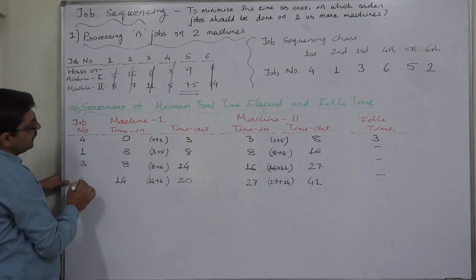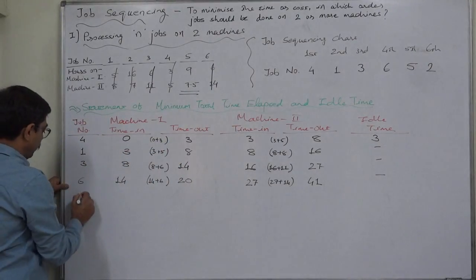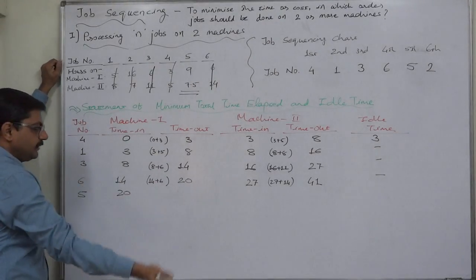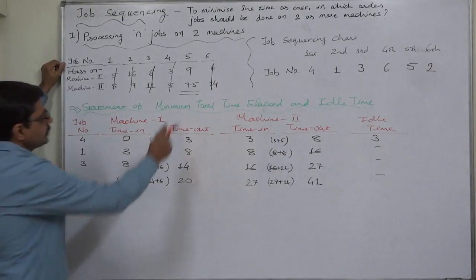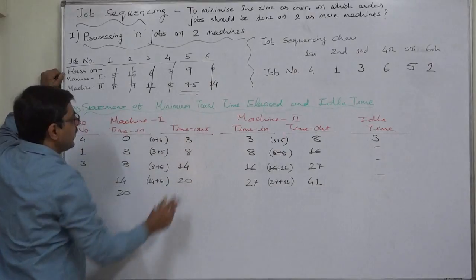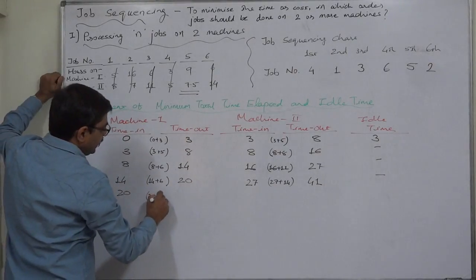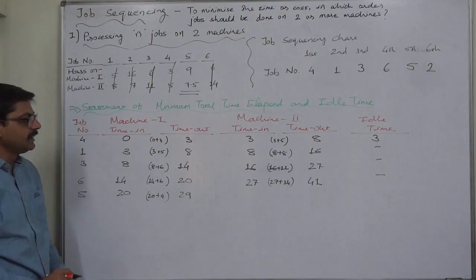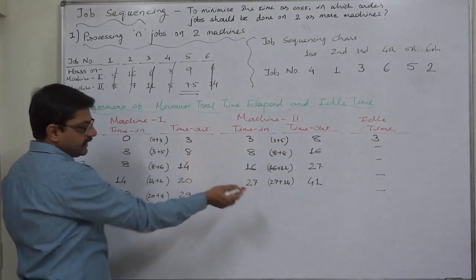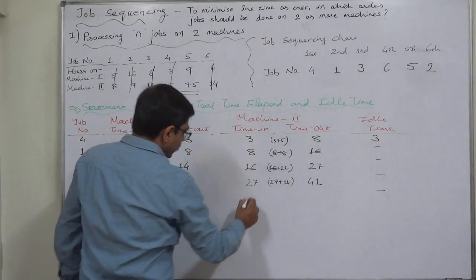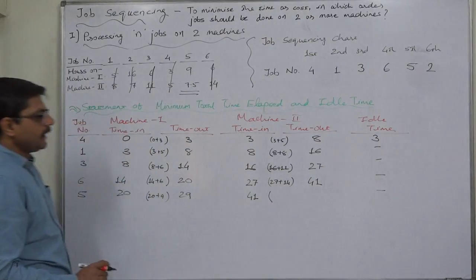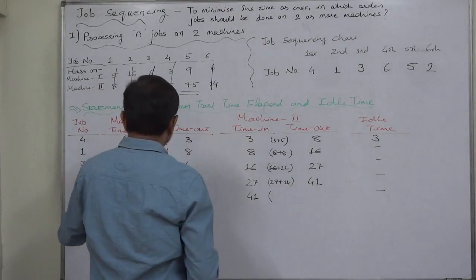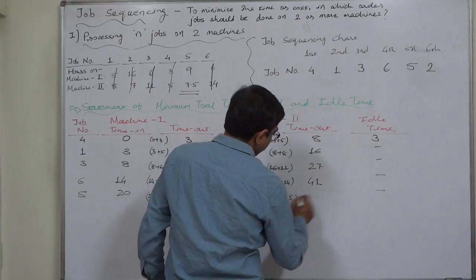On machine 1, after completing job number 6, it is the turn of job number 5. Job number 5's timing is 20 on machine 1, because immediately after completing job 6, machine 1 takes job number 5. Job number 5 needs 9 hours on machine 1, so 20 plus 9 gives 29. But at that point machine 2 is busy completing job number 6, so there is no idle time — the job is waiting, not the machine. 29 or 41, whichever is higher, gives 41 as the time in for job number 5 on machine 2. Job number 5 requires 7.5 hours on machine 2, so 41 plus 7.5 gives 48.5.